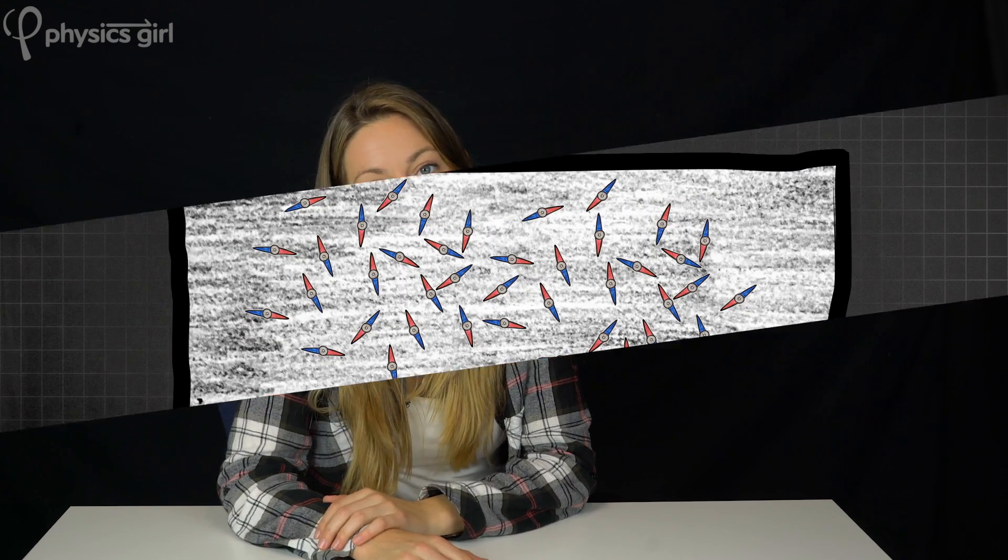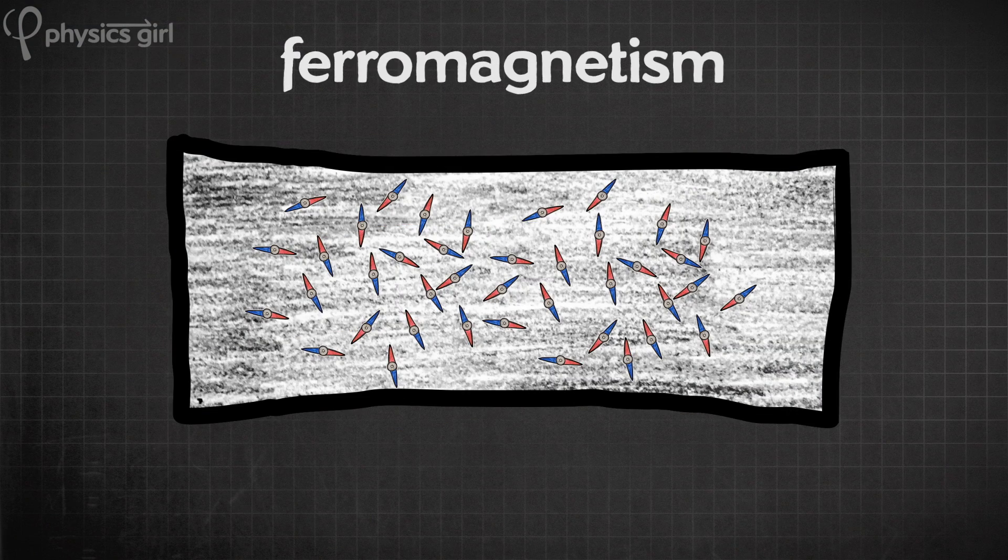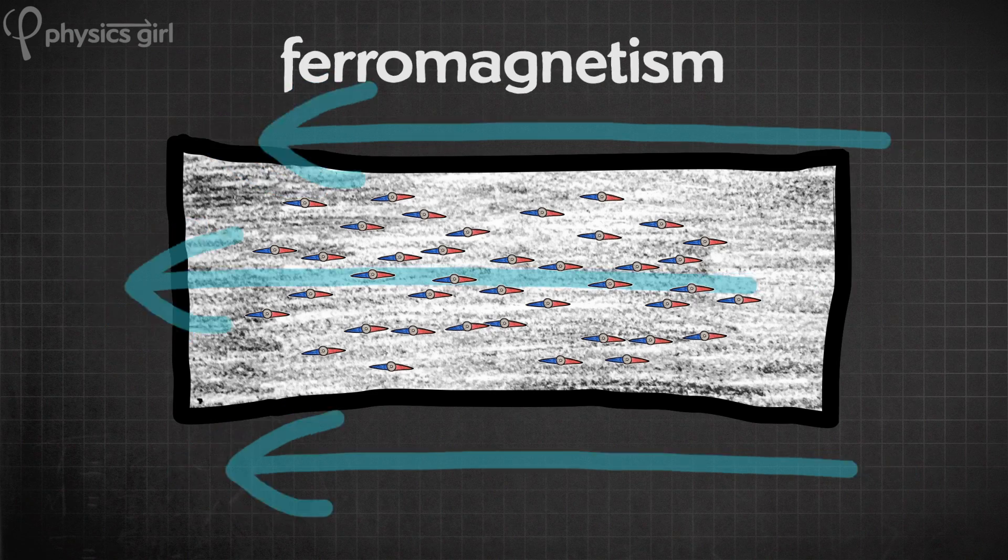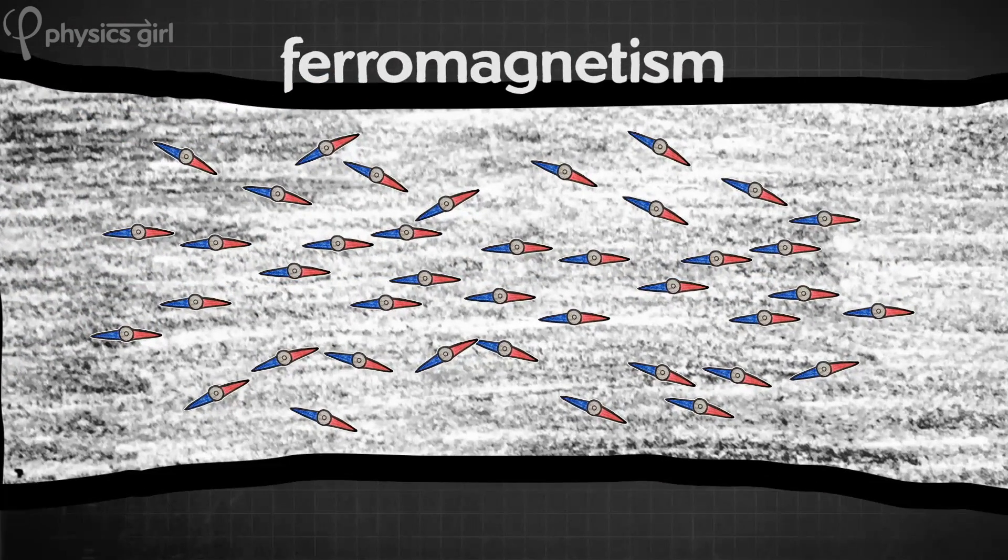Now, iron, in turn, has ferromagnetic properties. So all of its little mini magnets align strongly with an external magnetic field and even keep some of that alignment after the field is removed. But there's a point when even the mini magnets in ferromagnetic materials won't align. And it's when you get them hot enough.